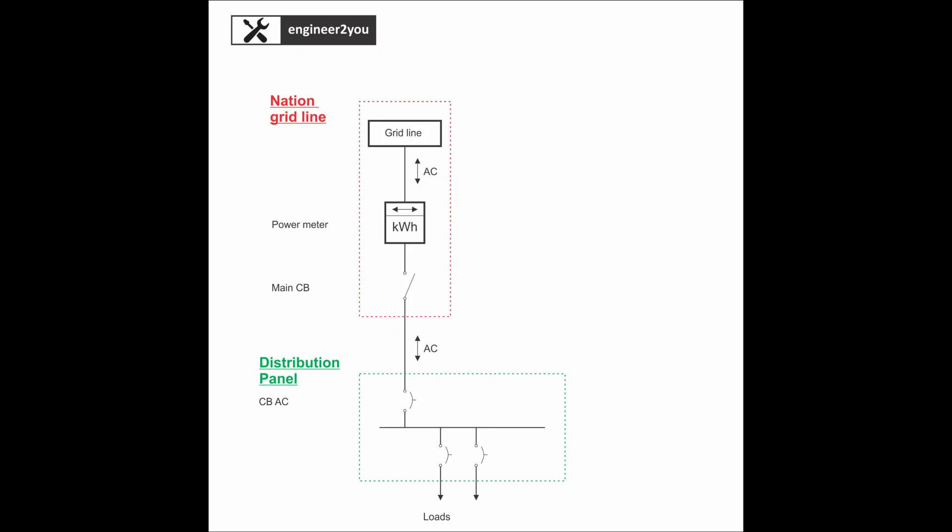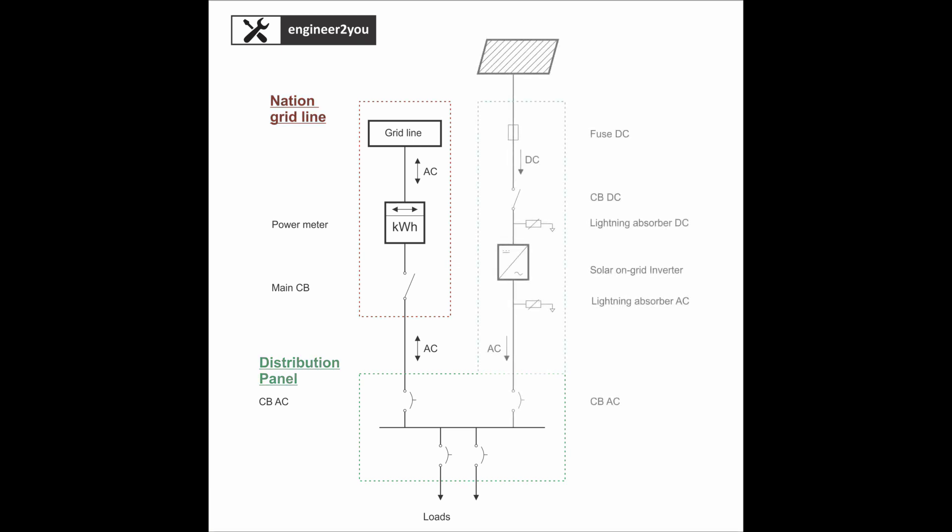To understand the installation, we should first understand the circuit diagram. As normal, our home will take power from the grid line as shown in this diagram. When the solar system is installed, the solar panel will connect to the on-grid solar inverter. The inverter will convert DC voltage into AC voltage and merge it into the grid line with the same frequency and voltage. The home appliance load will then take power from both the grid line and the solar system. If the solar system produces more power than the load, the excess power will be fed into the grid line. The power meter will record the amount of power fed into the grid, and the nation's power agency will make payment for that amount.